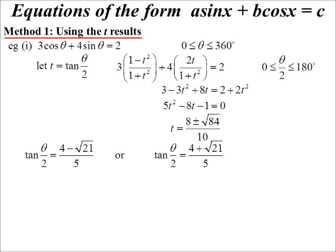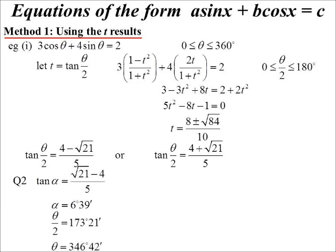Let's look at 4 minus root 21 over 5 first. Would that be positive or negative? Negative. So which quadrants are we in? Just quadrant two, remember, we're only looking for answers between 0 and 180. Because we know that's a negative number, to find the acute angle I key it in the other way around: root 21 minus 4 over 5. That gives me the acute angle of 6 degrees 39 minutes. In the second quadrant that's 173 degrees 21 minutes. But now we double it to find what theta is, so we've got one answer: 346 degrees 42 minutes.